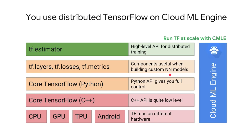You often don't need a custom neural network model. The Estimator API is a high-level API. It knows how to do distributed training, how to evaluate, how to create a checkpoint, how to save a model, and how to set it up for TensorFlow serving. It comes with everything done in a sensible way that fits most ML models in production.